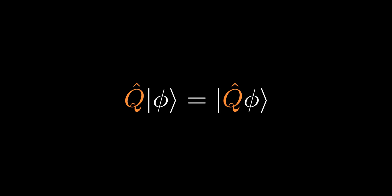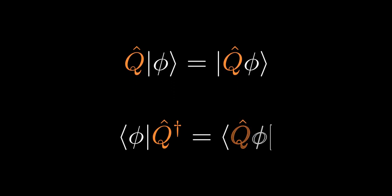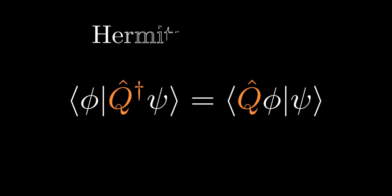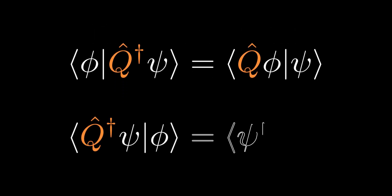It will be proved to be useful to have an operator that can operate on the corresponding bra of the original ket to produce the corresponding bra of the resultant ket on the right side of the equation on the screen. We use a dagger to denote the relationship between this new operator and the original operator Q. We now right multiply both sides by ket ψ to define the Hermitian adjoint of an operator. Taking the complex conjugate of both sides yields the equation on the screen.